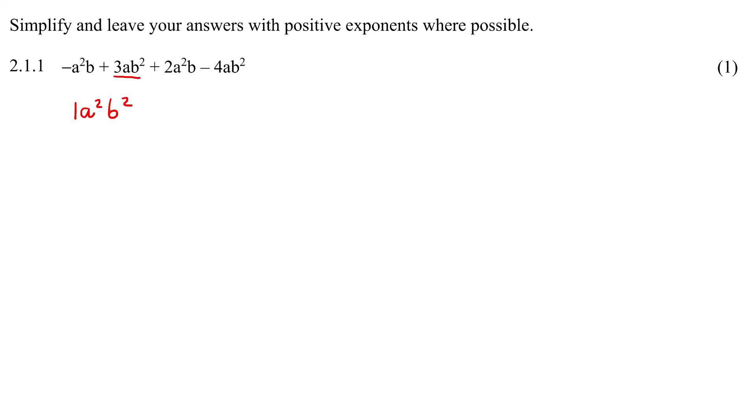And now here we have an ab², and here we have another ab². So let's put them together. What is three take away four? Well, that is minus one. And there we go.